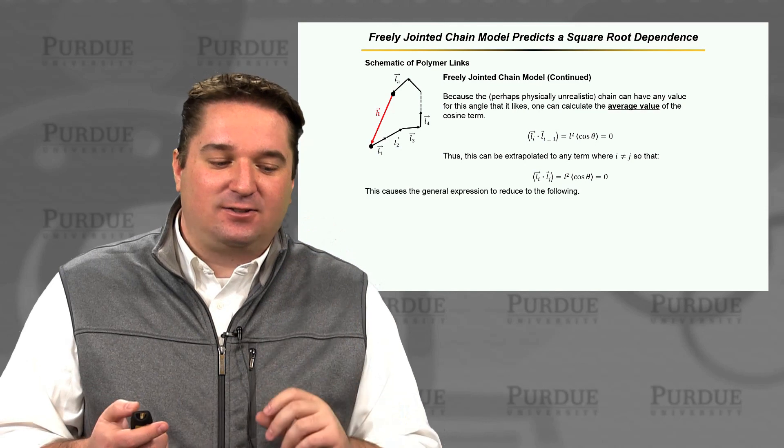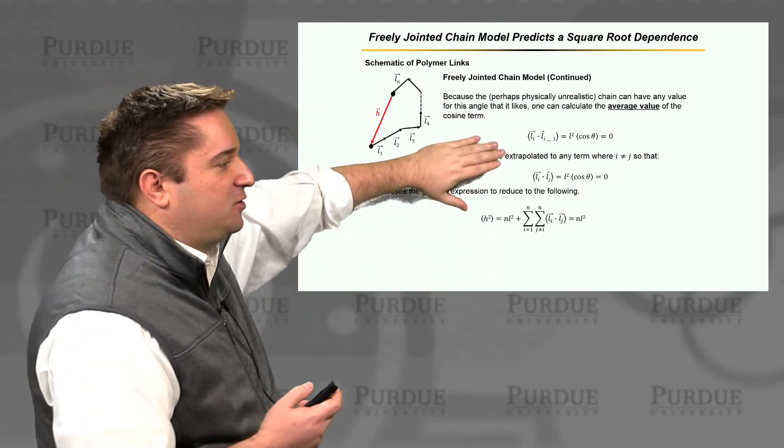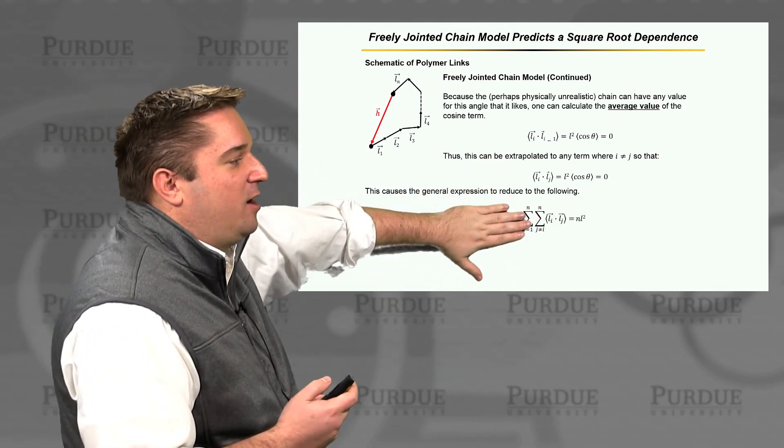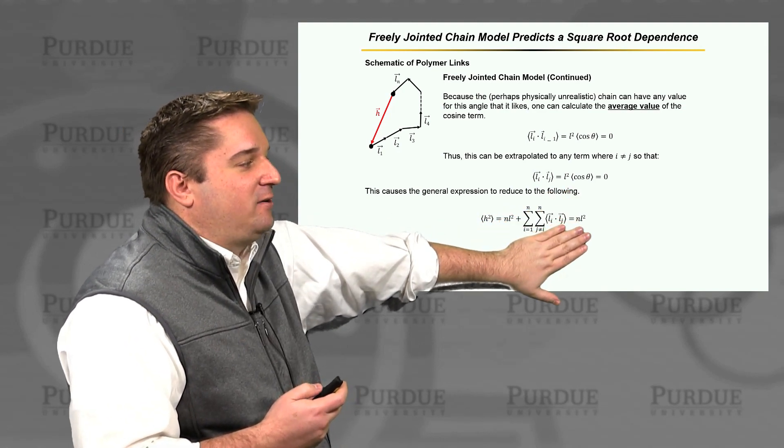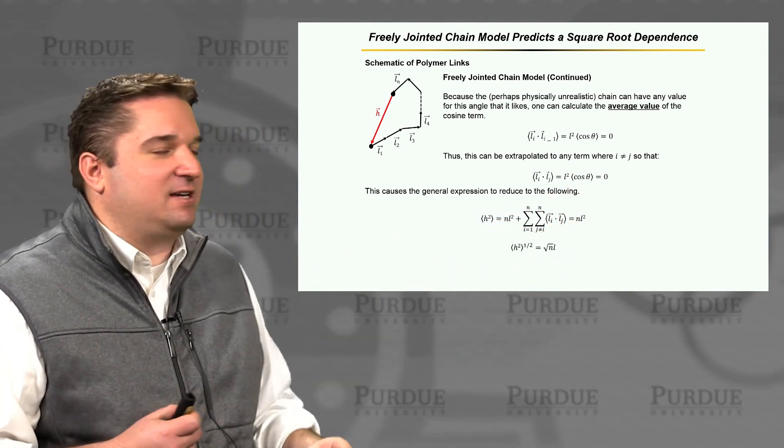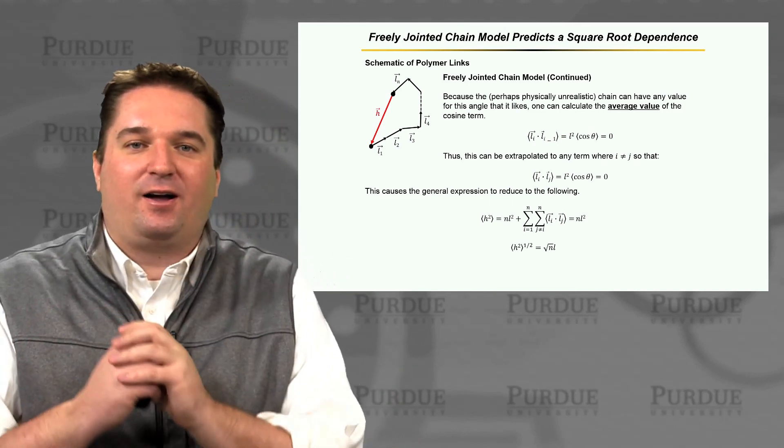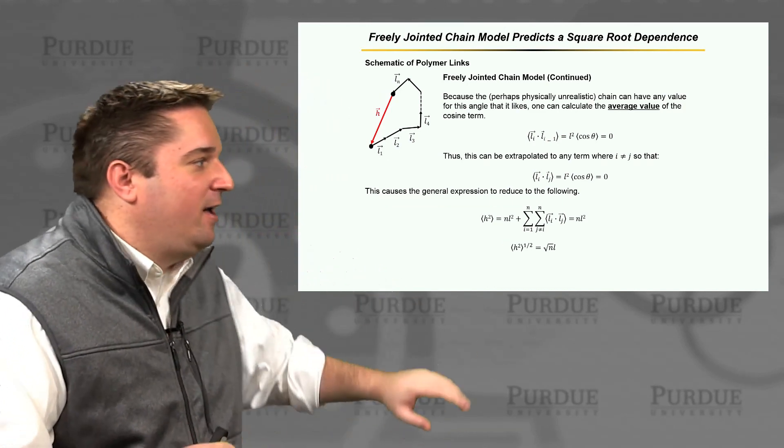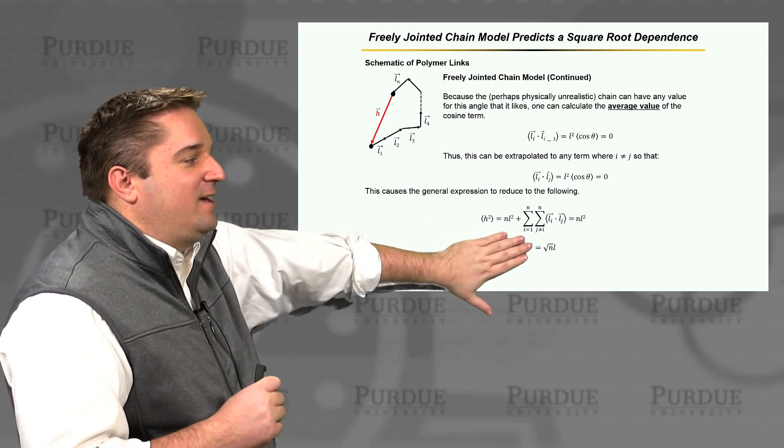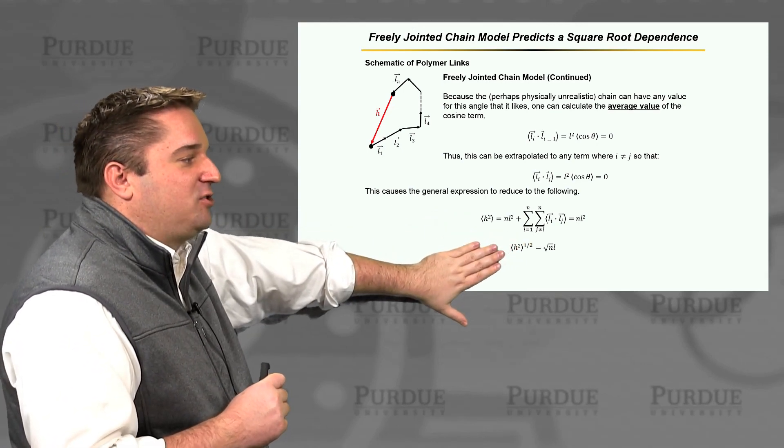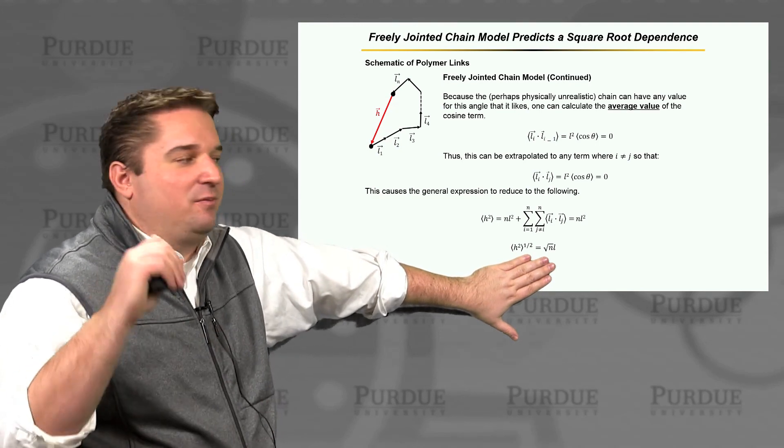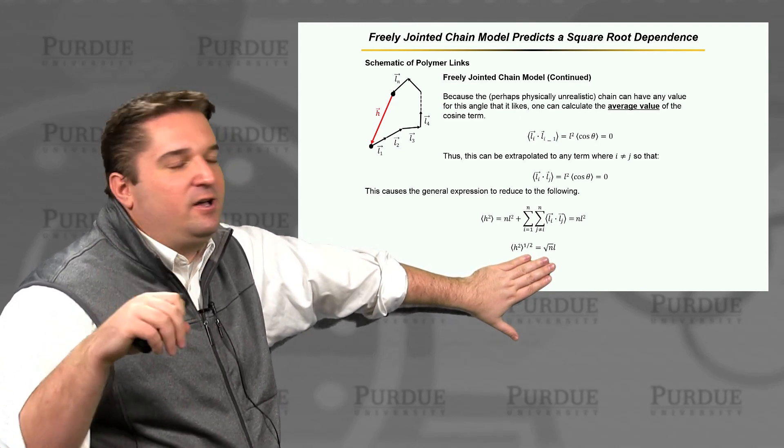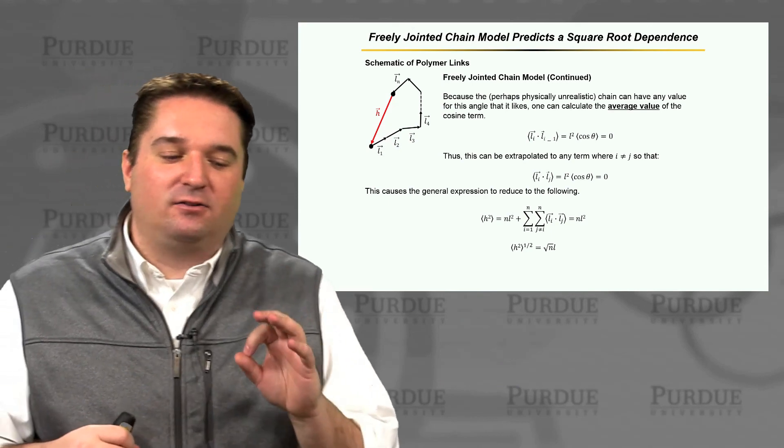Now if that's the case, we cause our general expression to be NL squared plus a term that goes away. So then we just get the NL squared back. So now we have the idea, and one of the most important concepts in all of polymer science, is the idea that the root mean squared end-to-end distance of a polymer chain is proportional to the square root of the number of links, the square root of N times the length of the link L.